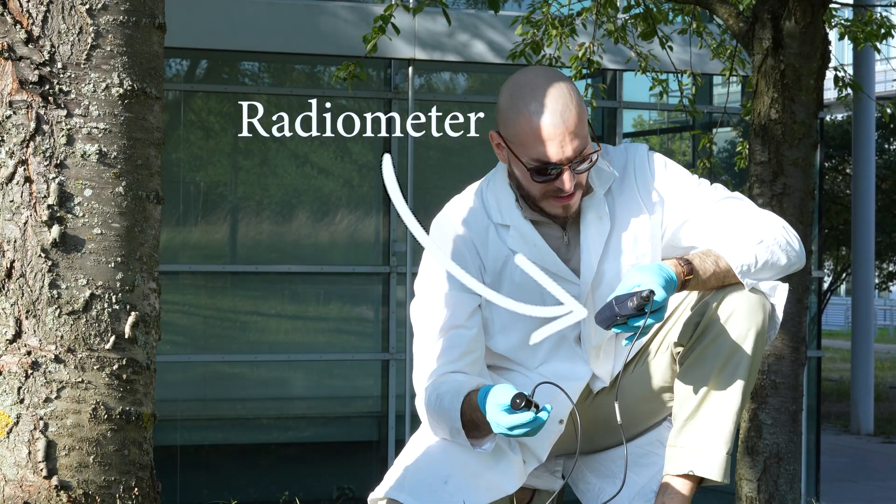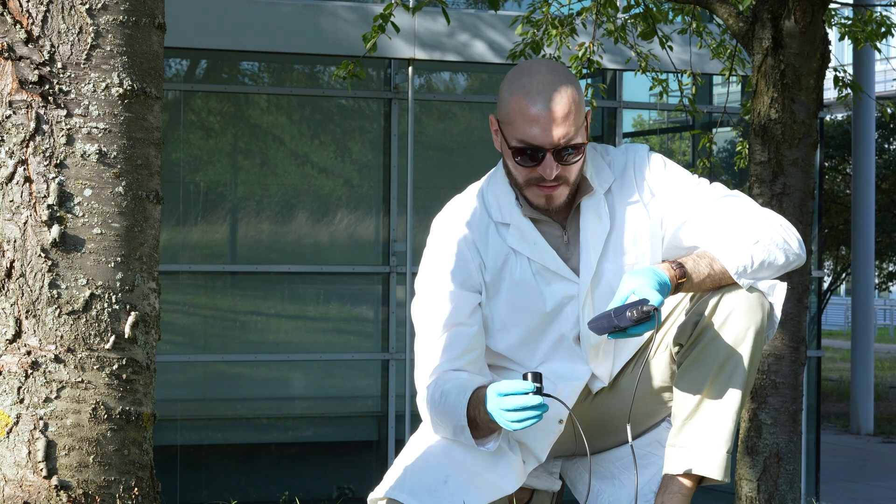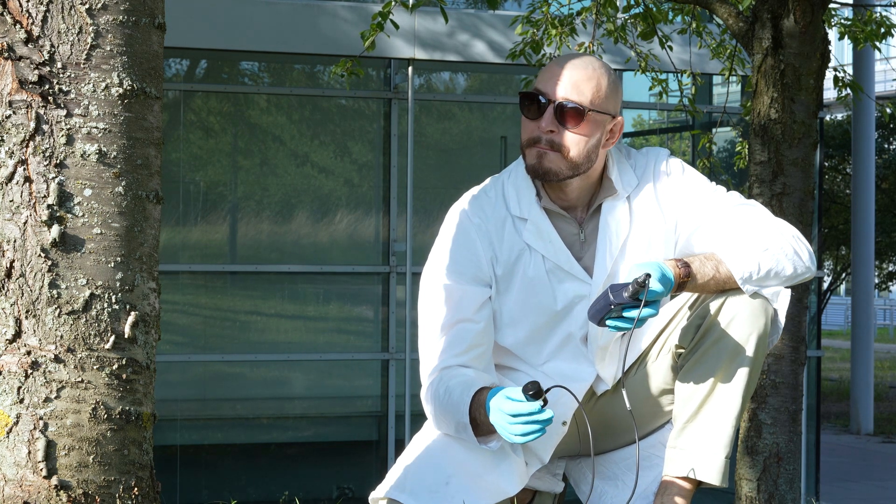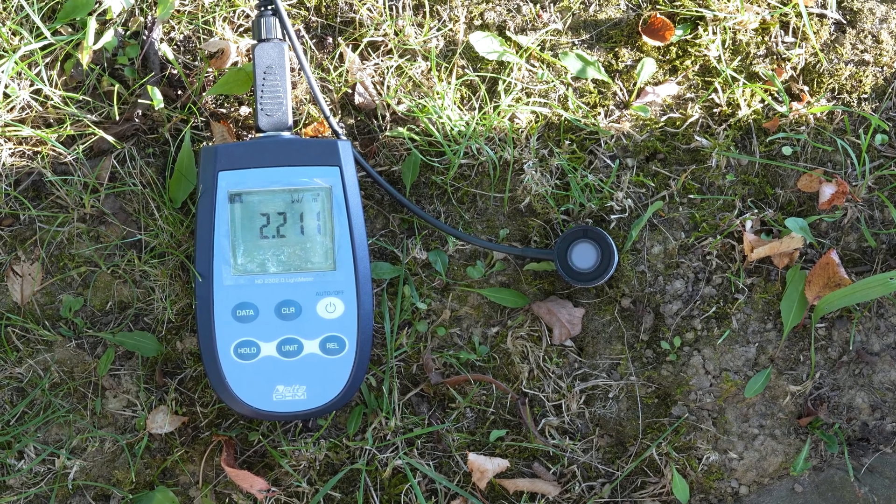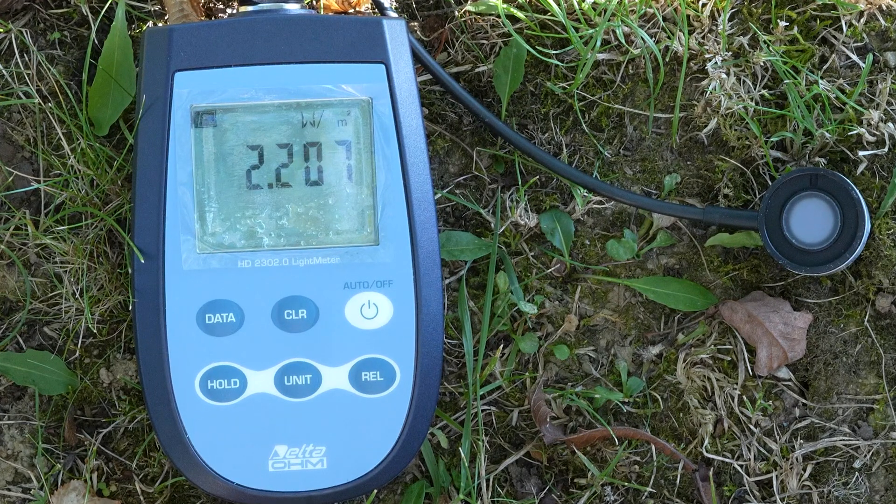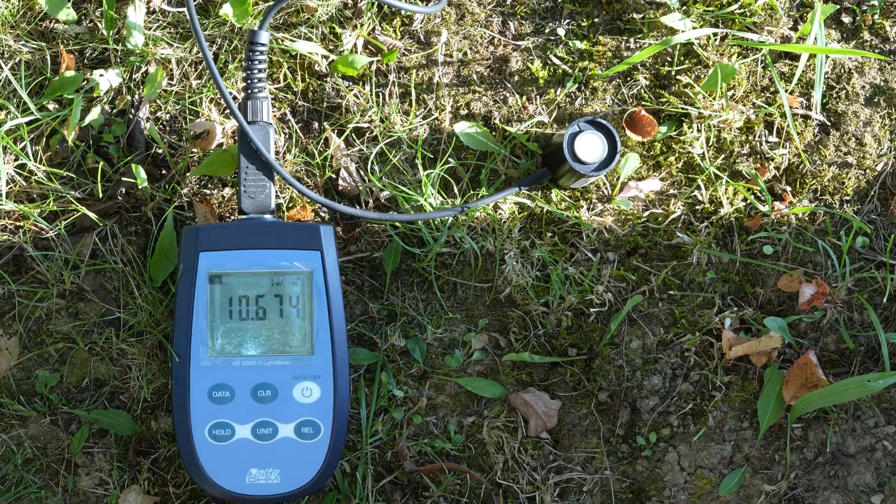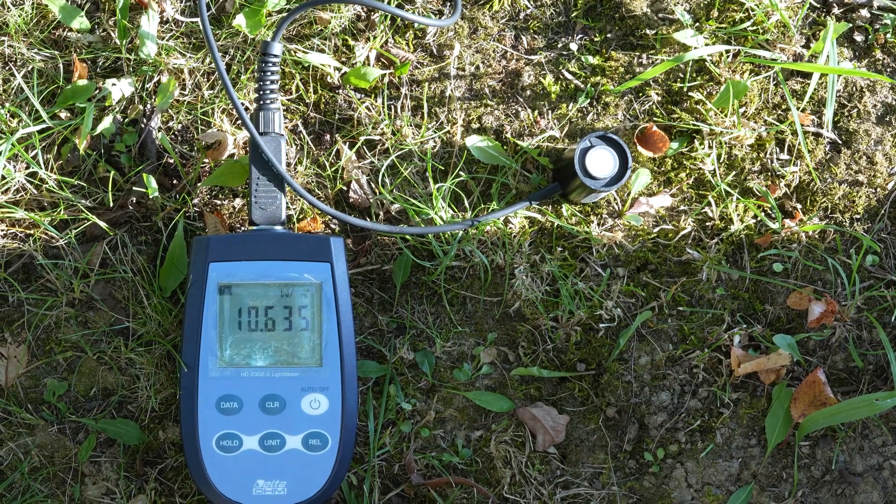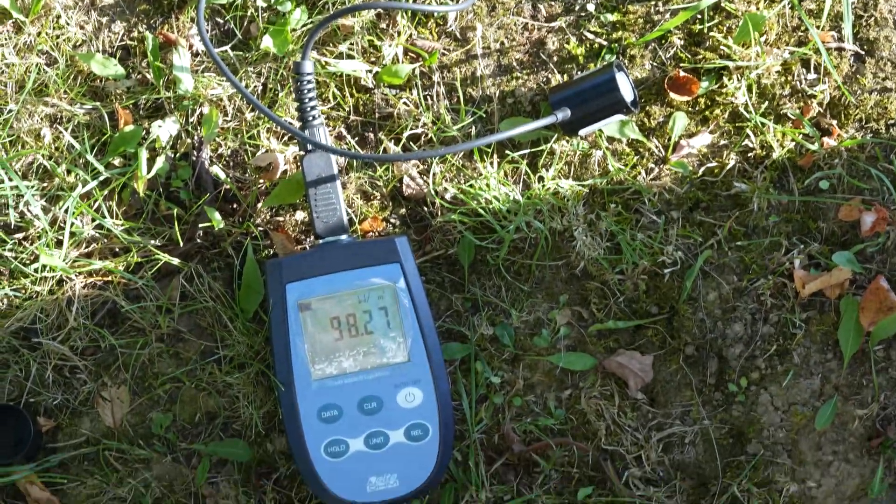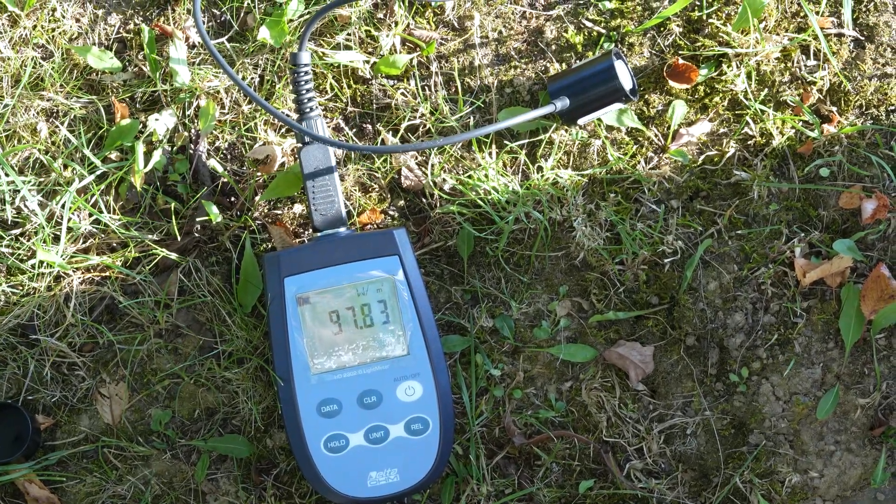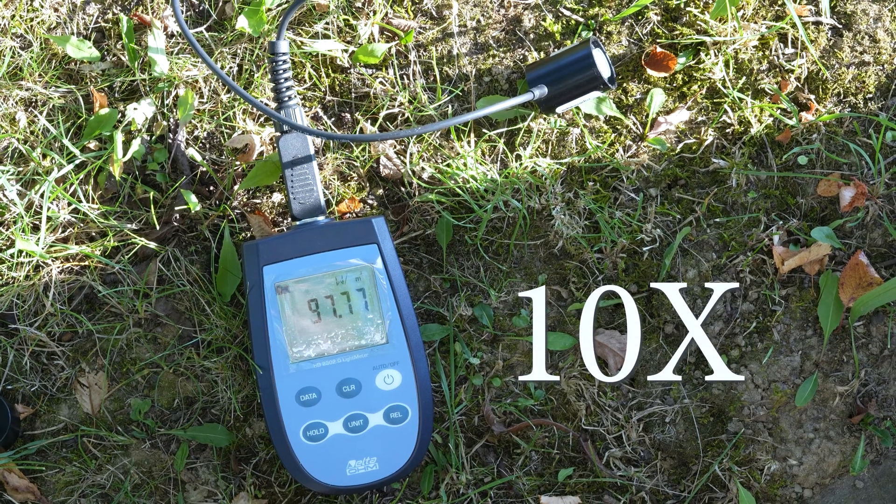I'm using a radiometer to measure the intensity of light as a function of the direction of the sensor. When I place the sensor in the shade, the radiometer reads approximately 2W per meter squared. When I place the sensor in the sun, the value increases to approximately 10W per meter squared. Now, when I tilt the sensor towards the sun, the intensity of light increases tenfold. And this proves why it's so uncomfortable to look straight into the sun.